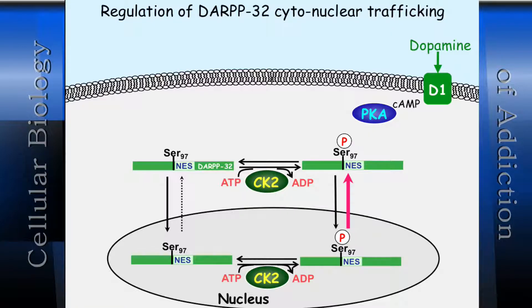Based on the data we obtained, we believe PKA phosphorylates B56-delta, which activates this specific form of PP2A that then dephosphorylates the serine-97 residue. Because there's less phosphorylation, the steady state shifts from the cytosolic form, and DARPP-32 builds up in the nucleus.